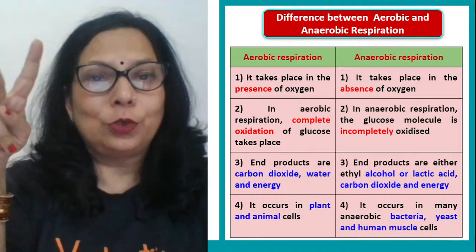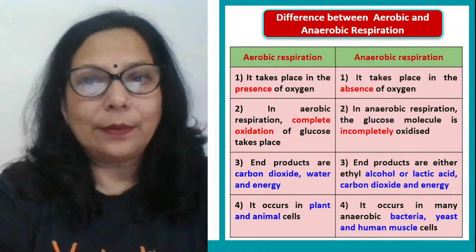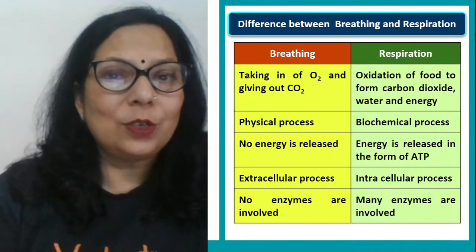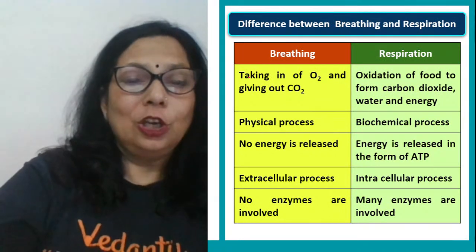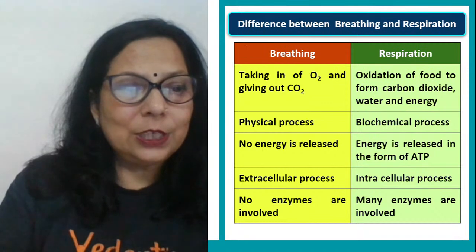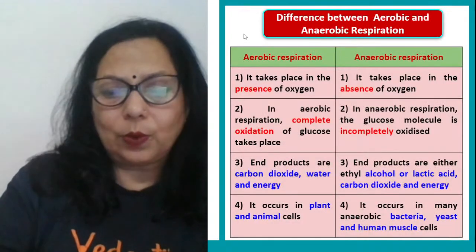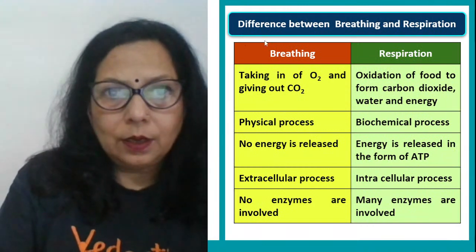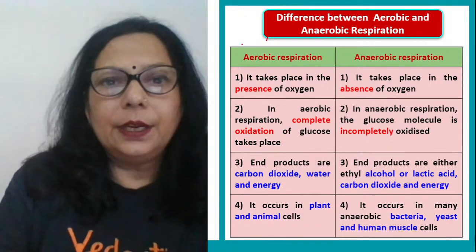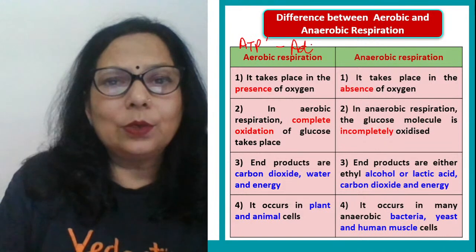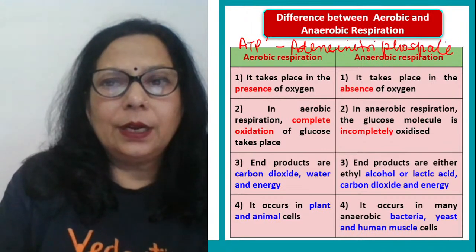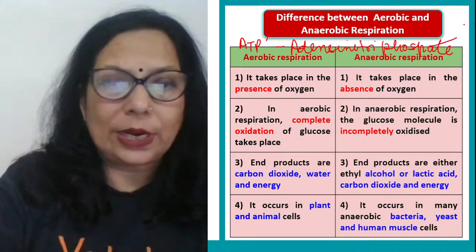Respiration can be of two types: aerobic and anaerobic. ATP is the energy currency — like rupees and paise, that is the currency. Energy stored in the body is in the form of currency called ATP — adenosine triphosphate. They contain energy, ATP molecules, adenosine triphosphate.